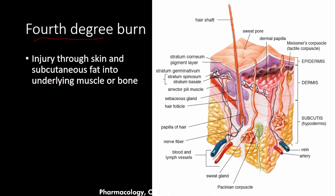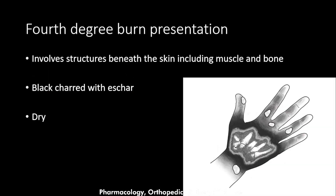So what is a fourth degree burn? It is an injury through the skin and subcutaneous fat into the underlying muscles or bone. In the skin we have many layers: the epidermis, the dermis, and the subcutaneous fat — and all of those are obliterated in the fourth degree burn, extending into the bone or muscle.